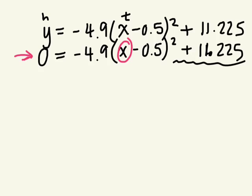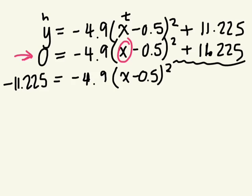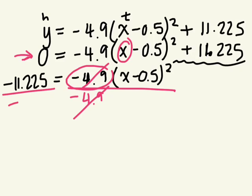We have this positive 11.225. What should we do with that? Move it to the left side. What does it become? Negative 11.225 equals negative 4.9 times (x minus 0.5) squared. Can we get rid of this multiply by negative 4.9? What's the opposite operation of multiplying something? So if I divide this by negative 4.9, this will cancel out. So what do I have to do to the left side? What's 11.225 divided by 4.9? 2.29 is equal to (x minus 0.5) squared.